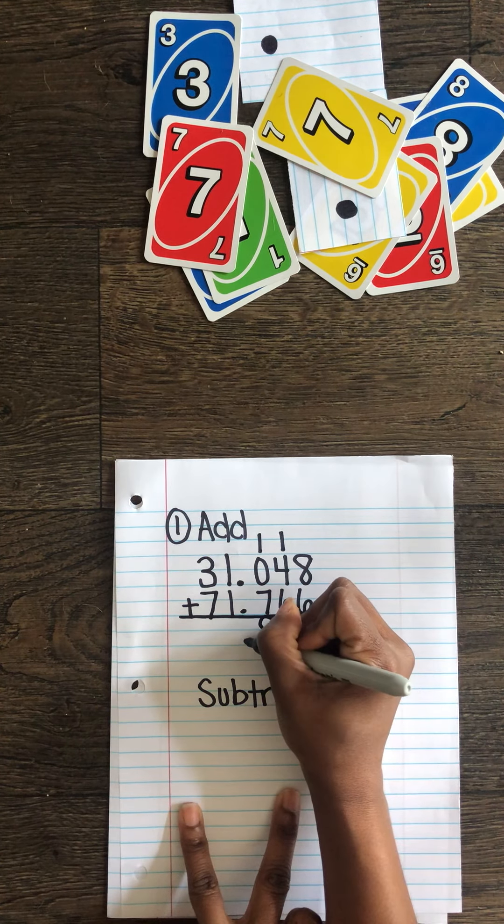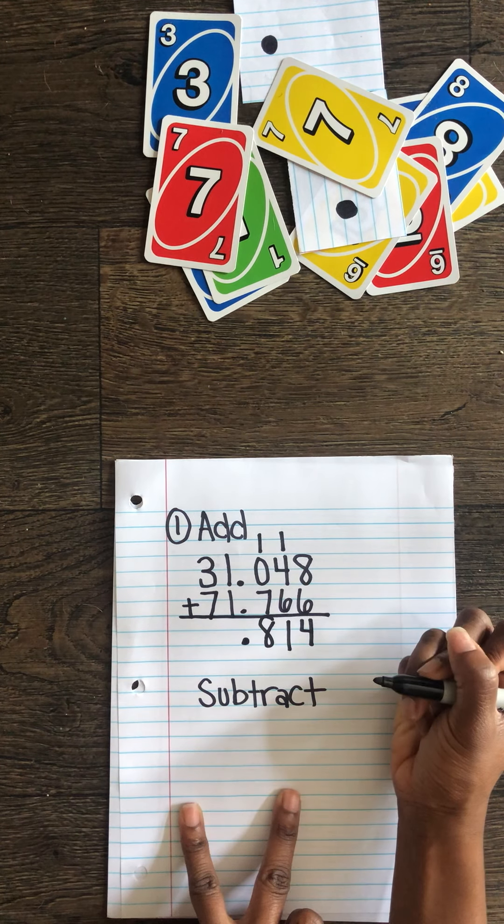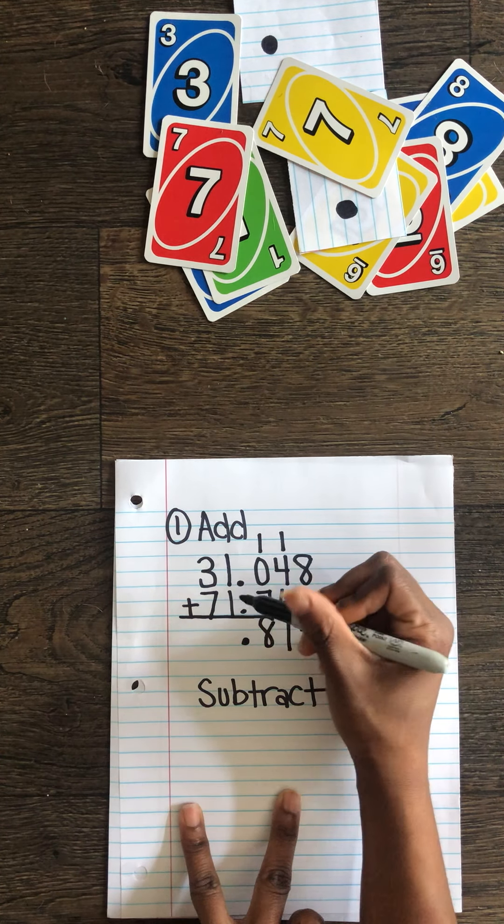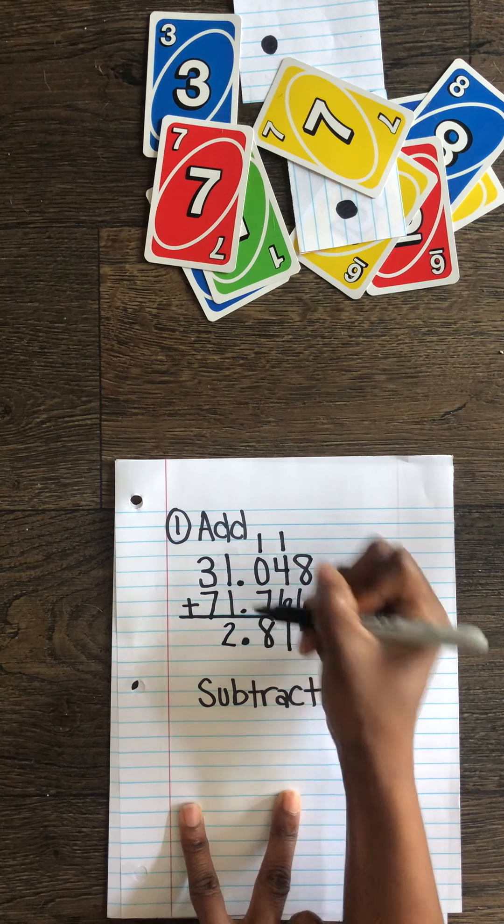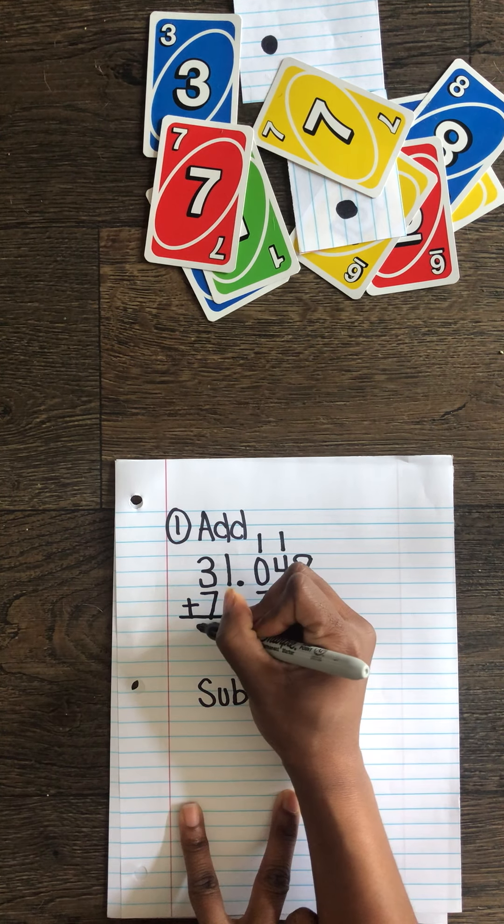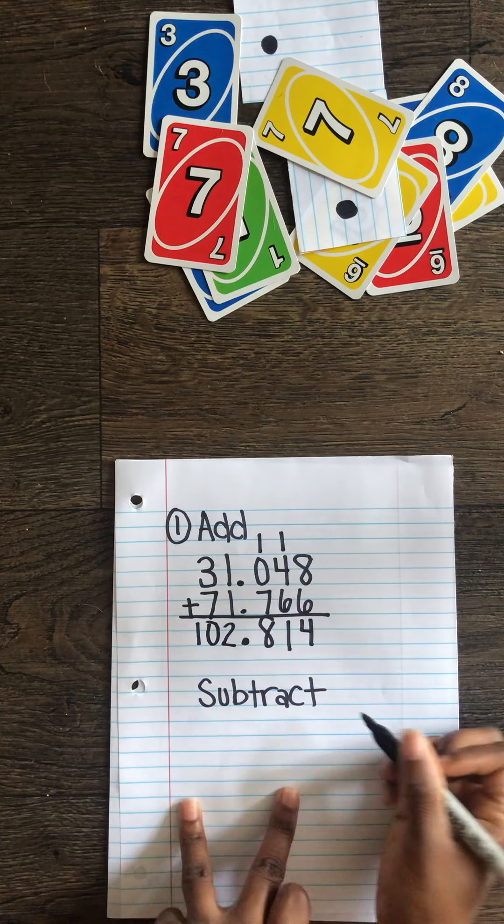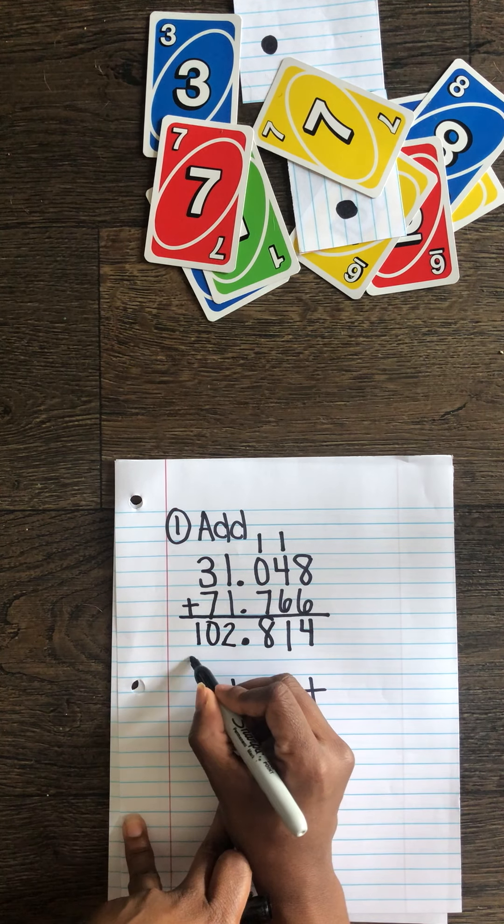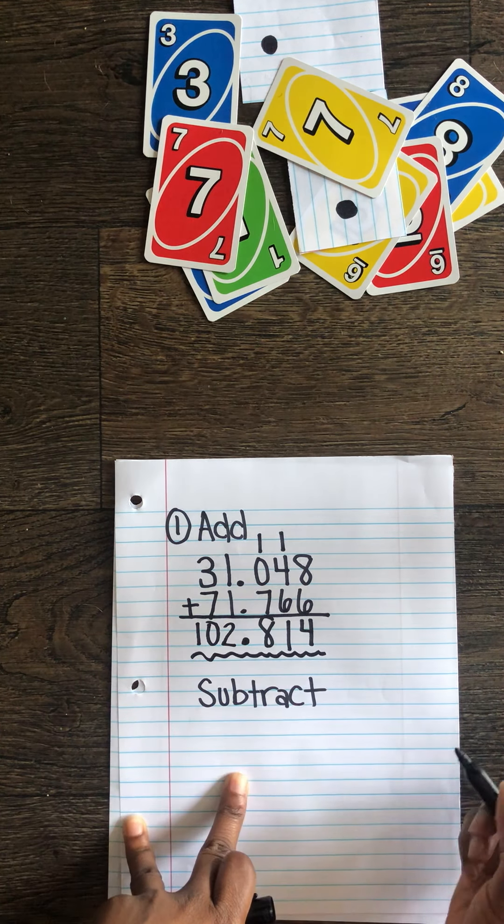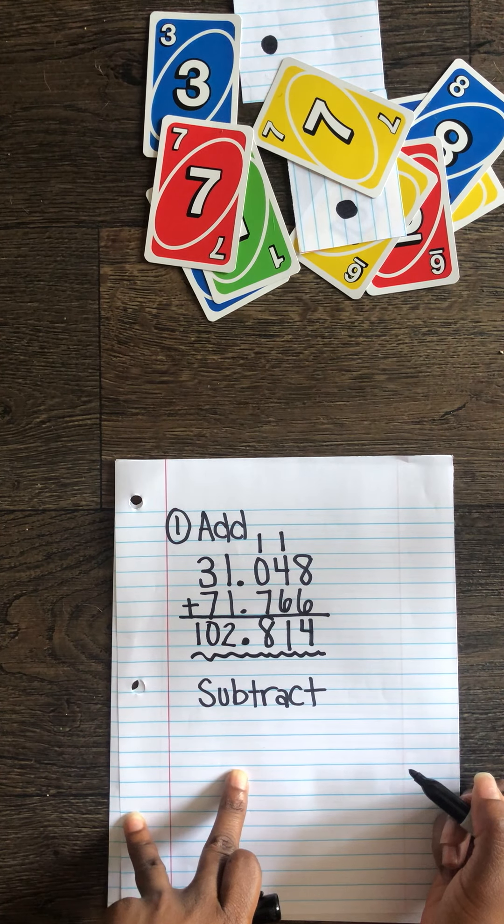We always want to make sure we leave that decimal in the same place. And continue on to the ones place. One plus one is two. And three plus seven is ten. So our sum is one hundred two and eight hundred fourteen thousandths.